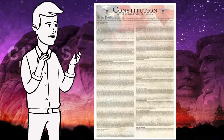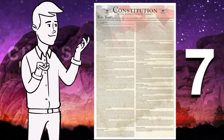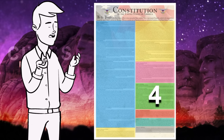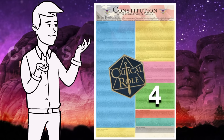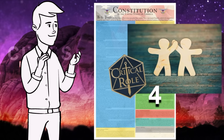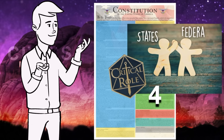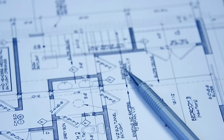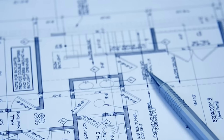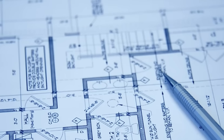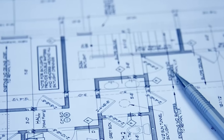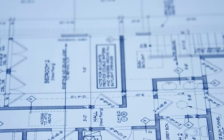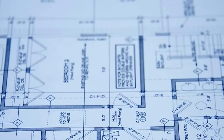The U.S. Constitution is made up of seven articles or sections, and Article 4 plays a critical role in defining the relationship between the states and the federal government. It outlines the framework for cooperation among the states and ensures that the rights and responsibilities of each state are respected across state lines.